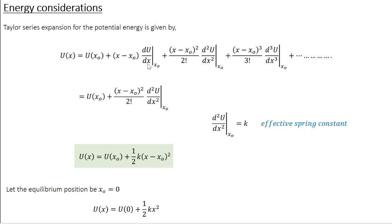Here, dU/dx — if U is the potential energy, the gradient of potential energy is nothing but the force. So dU/dx at x₀, the equilibrium position, the force is 0, so the derivative is going to be 0, and the second term also vanishes. You are left with U(x) equal to U(x₀) plus (x − x₀)²/2! times d²U/dx² at x₀.